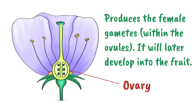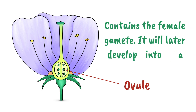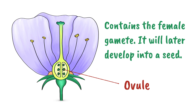Those ovules are found here inside the ovary. You can see six ovules in this diagram. It's within the ovule that the female gamete is found. The ovules will go on to form seeds.